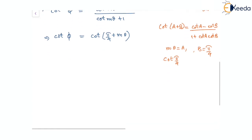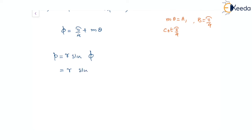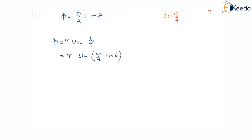From here we can compare the angles and say that φ equals π/4 plus mθ. Now, coming back to the perpendicular distance of the tangent from the pole at any point, this is given as p equal to r sin φ. With φ equal to π/4 plus mθ, this becomes p equal to r times sin(π/4 plus mθ).